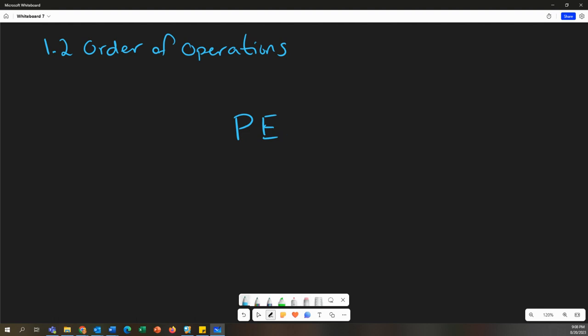Now I write PEMDAS a little bit differently than some. When I get to the M and D, I put them on top of each other, and then the A and S on top of each other, and there's a reason for that. So P is parentheses, E is exponents—this is the order that you simplify in. M is multiplication, D is division, A is addition, and S is subtraction.